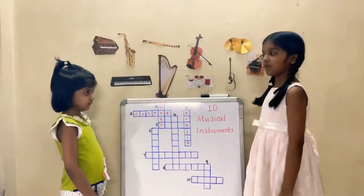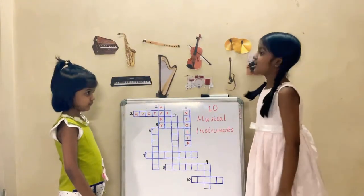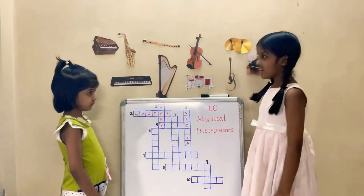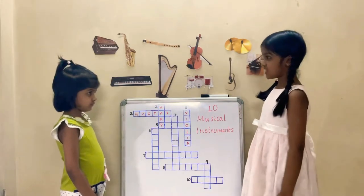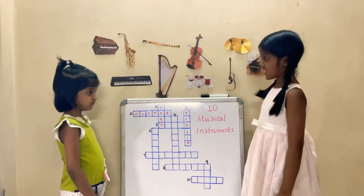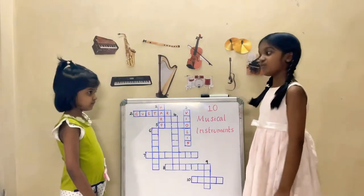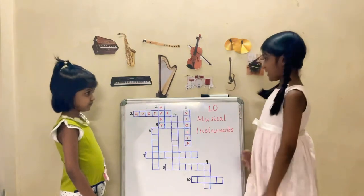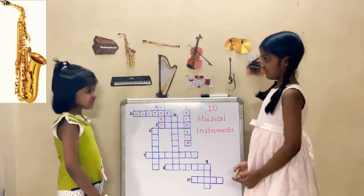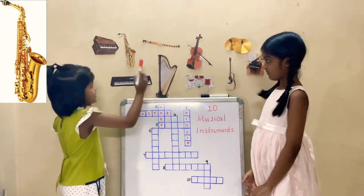Let me tell you the clue for the fourth musical instrument. This is a single reed woodwind instrument. The shape of this instrument is conical. It is usually made of brass. This was invented by Adolf Sachs. Can you guess the name of the instrument? Yes, the name of the instrument is saxophone.